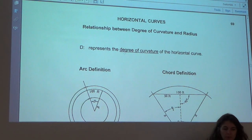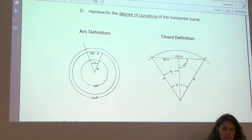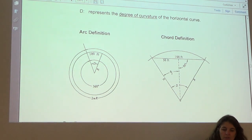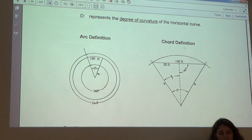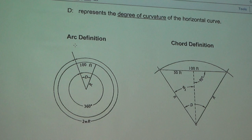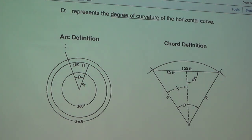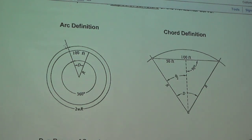Capital D represents the degree of curvature, and there are two definitions: the arc definition and the chord definition. In civil engineering design, the arc definition applies to roads — highways, interstates, freeways — all roads with cars use the arc definition. Railroads go by the chord definition. As for why railroads use the chord definition and highways use the arc definition, I honestly have not looked that up. We actually looked at both definitions way back the first day of class when we dealt with that trig geometry problem.